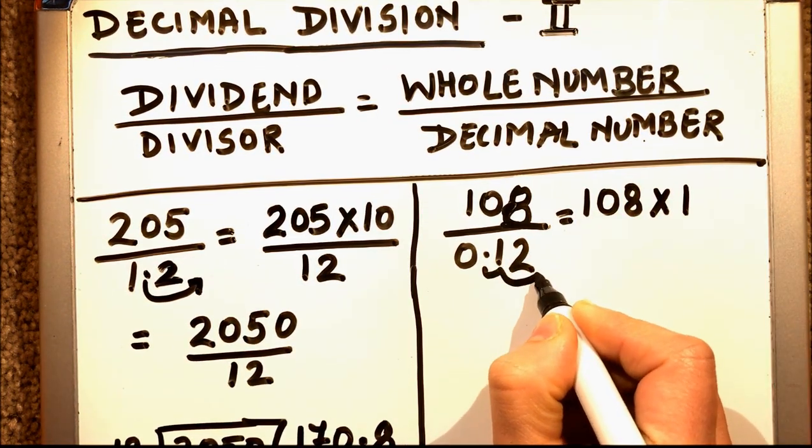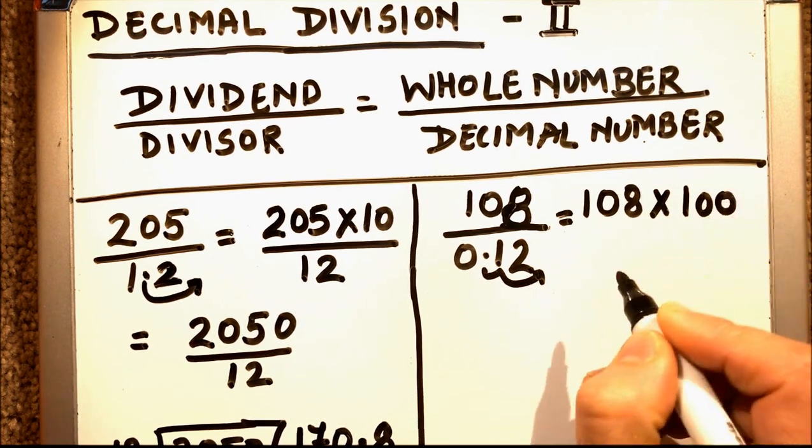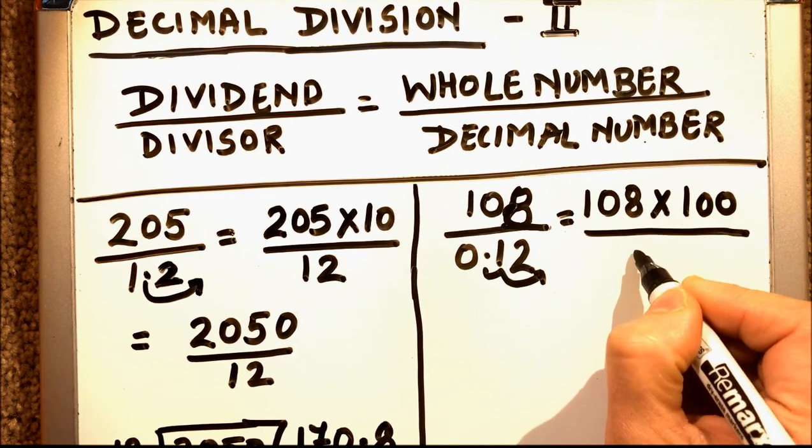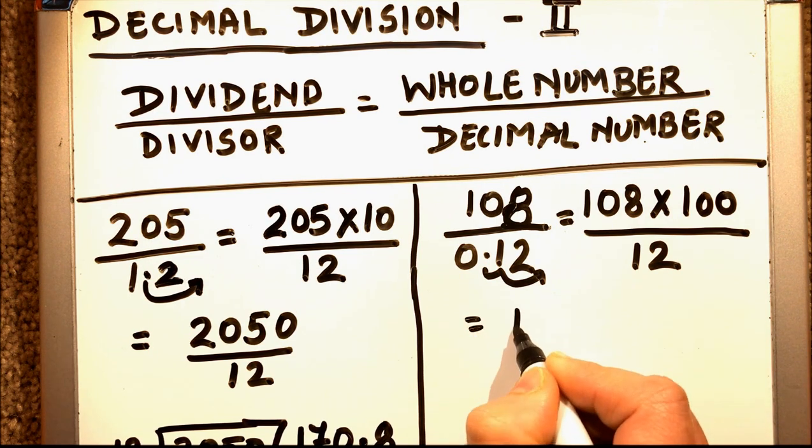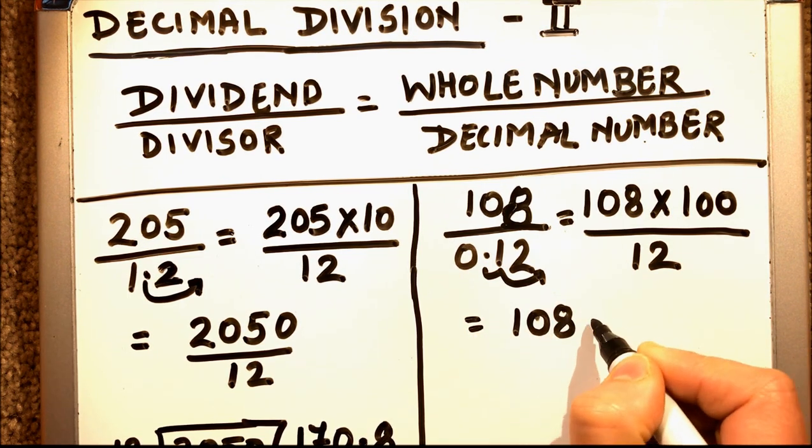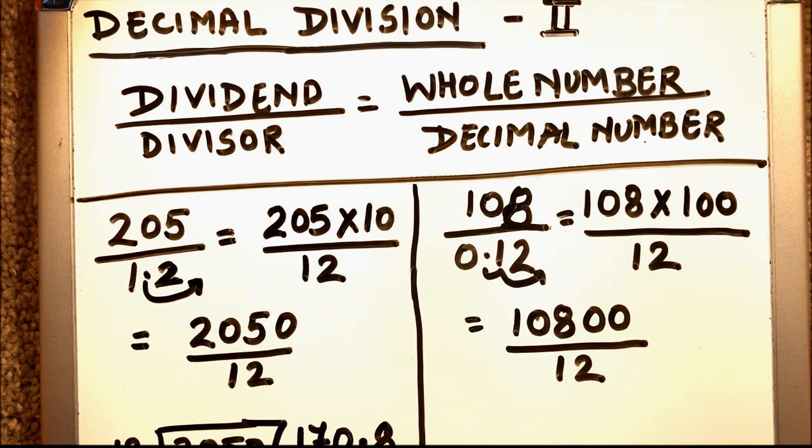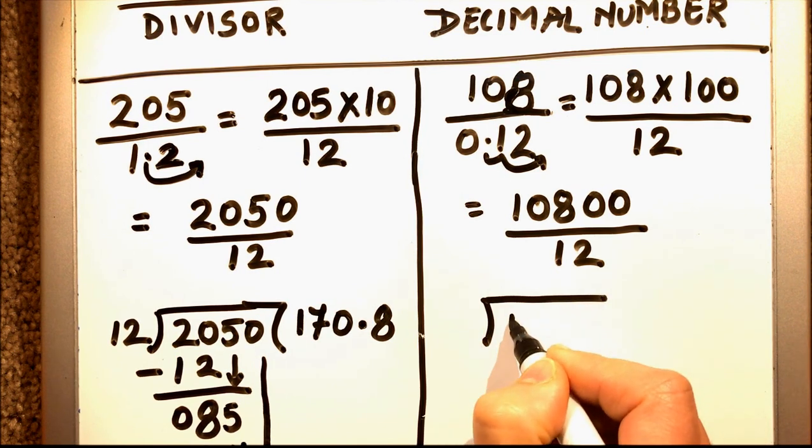We'll add that many zeros to the dividend as we are moving the point two decimal places. So we'll add two zeros in the dividend. So this will be 108 times 100 divided by 12. So this final question now will become 10800 divided by 12.